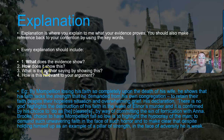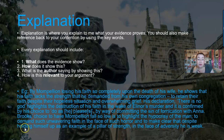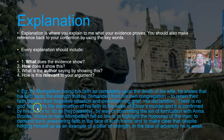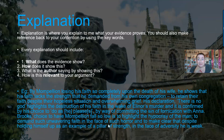Then the next question: what is the author saying by showing this? Brooks's choice to have Montpellier fall so low is to highlight the hypocrisy of the man — to demand such unwavering faith in the face of such horror — and to make clear that despite holding himself up as a pillar of strength in the face of adversity, he is weak. What I did there was cover not only the author element, but also talked about how it was relevant to my argument. Montpellier is weak, which ties it back to your argument.